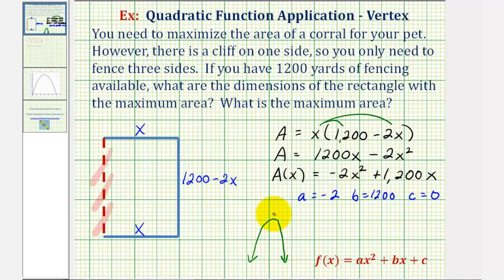And therefore, the x-coordinate of this vertex here would actually give us the length of this side of the rectangle that would maximize the area, and the y-coordinate of the vertex would be that maximum area.